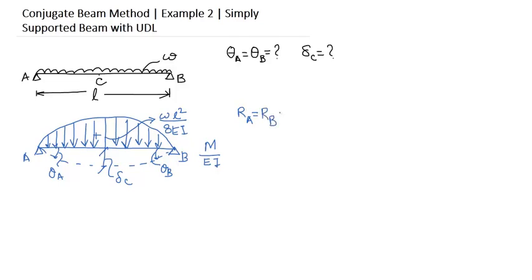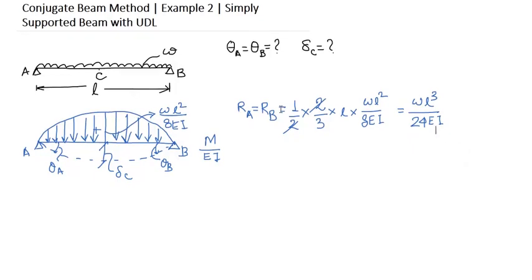So RA equals RB equals this total loading, which is the area of the parabola divided by two. Let us write down half into area of the parabola, which is two-third base into height. Base is here L, the length of the beam, height is WL squared by 8EI. So it becomes WL cubed by 24EI. So we have determined theta A and theta B.